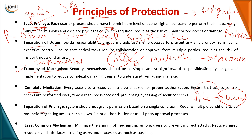Separation of privileges means that when granting permission to access a file, you don't rely on a single condition — you put multiple conditions, and only upon satisfaction of all conditions is the file assigned to the user. Least common mechanism means you try to minimize the amount of shared data among users.